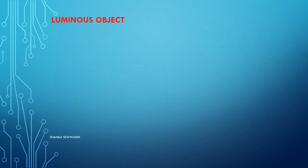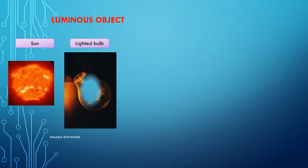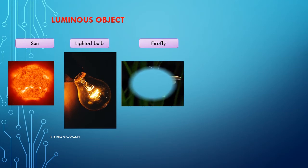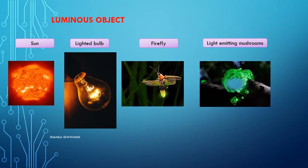What are the examples for luminous objects? Sun, lighted bulbs, lighted lamps, fireflies, light-emitting mushrooms — all are examples of luminous objects.